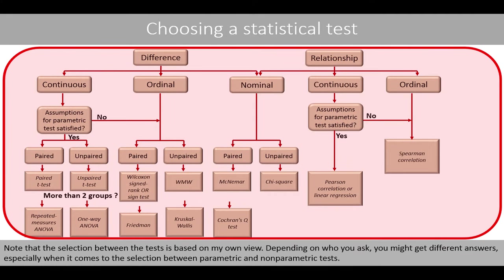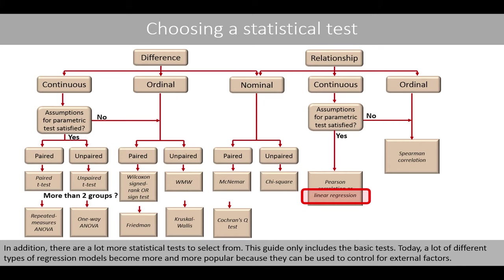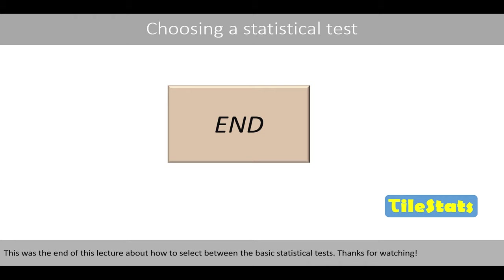Note that the selection between the tests is based on the lecturer's own view — depending on who you ask, you might get different answers, especially when it comes to the selection between parametric and nonparametric tests. Also note that a simple linear regression model can be used instead of an unpaired t-test if the independent variable has a nominal scale with two groups; the two tests will result in the exact same p-value. There are many more statistical tests to choose from; this guide only includes the basic tests. Today, regression models are becoming more popular because they can be used to control for external factors. This was the end of this lecture about how to select between the basic statistical tests. Thanks for watching!